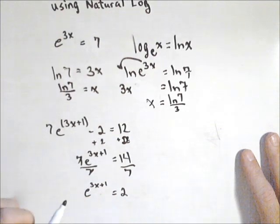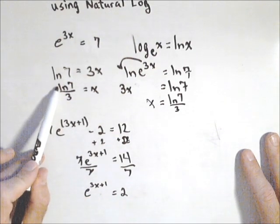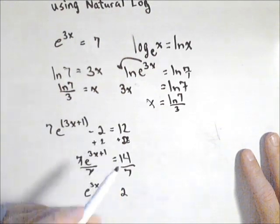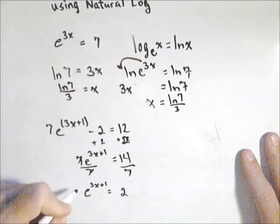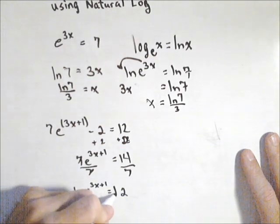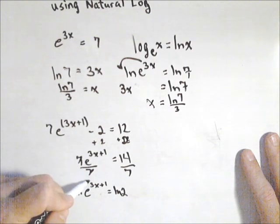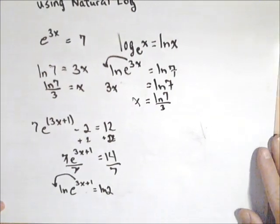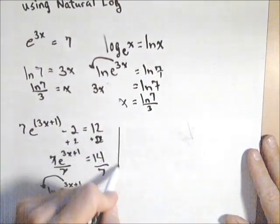And again, we're at that point where we can think of rewriting it as a natural log, or we can think of taking the natural log of both sides. So let's take the natural log of both sides. That allows us to pull our exponent out front.